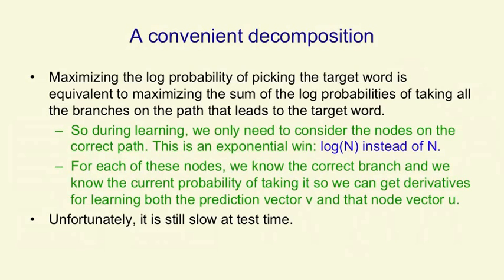So during learning, we only need to consider the nodes on that correct path. And that's a huge win. That's exponentially fewer nodes than considering all of the nodes. So it's log to the base 2 of n instead of n.